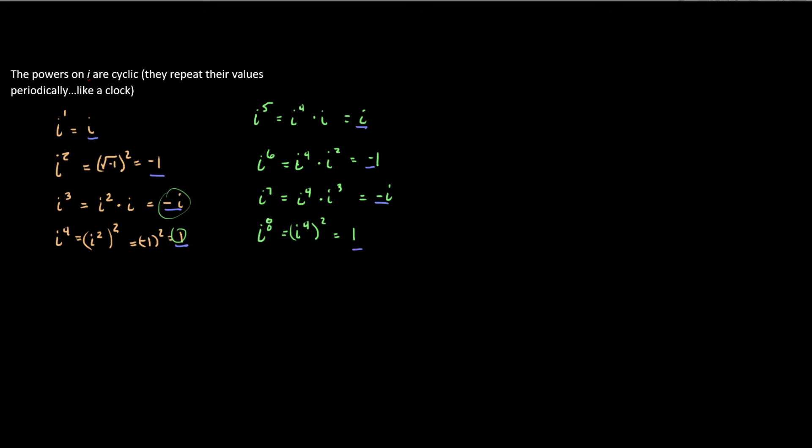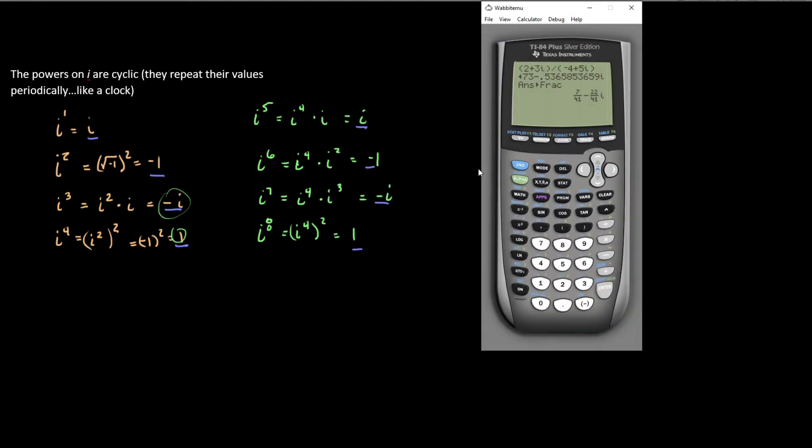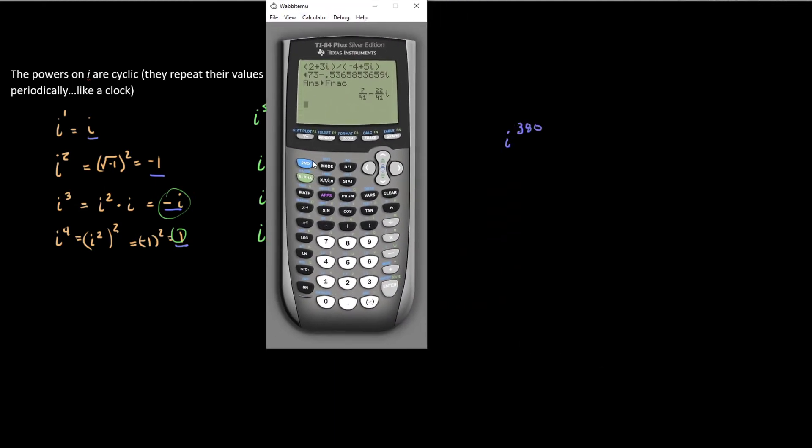So let's say we wanted to find i to the 380th power. And we're like, oh well, I guess I could go through this process until I hit 380. I could probably just throw up my calculator, right? So why don't we do that? Let's take i and let's raise it to the 380th power and hit go.